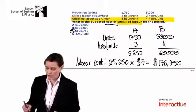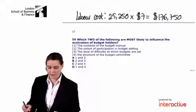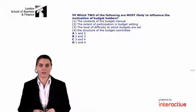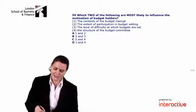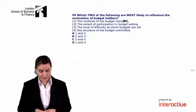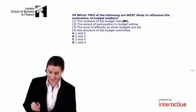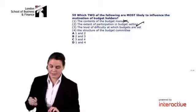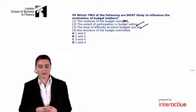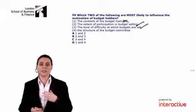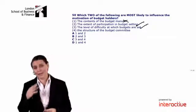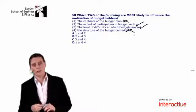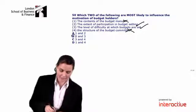Our final question: which two of the following are most likely to influence the motivation of budget holders? Option one - the contents of the budget manual - unlikely; that's really just an administrative item. Option two - the extent of participation in budget setting - absolutely, as mentioned earlier, being involved in setting targets increases motivation. Option three - the level of difficulty of the budgets - yes, this affects motivation; if targets are far too hard it becomes incredibly demotivating because you'll never achieve them. Option four - the structure of the budget committee - again more of an administrative issue. So the correct answer is B: options 2 and 3.